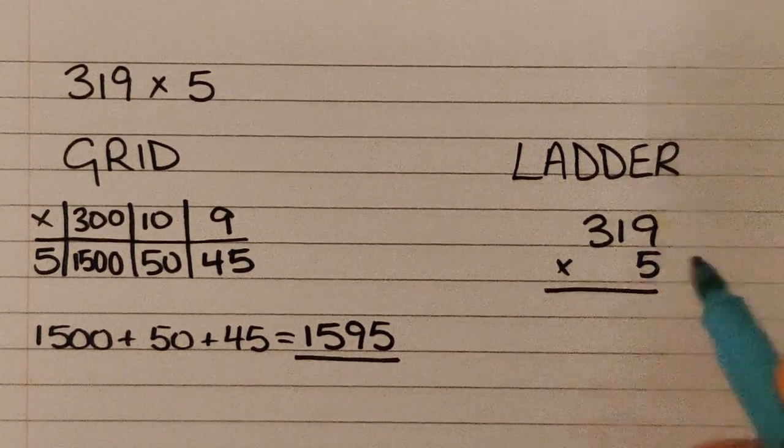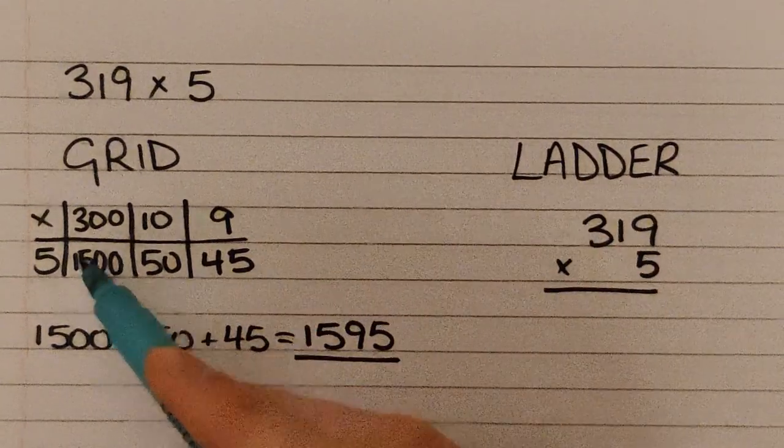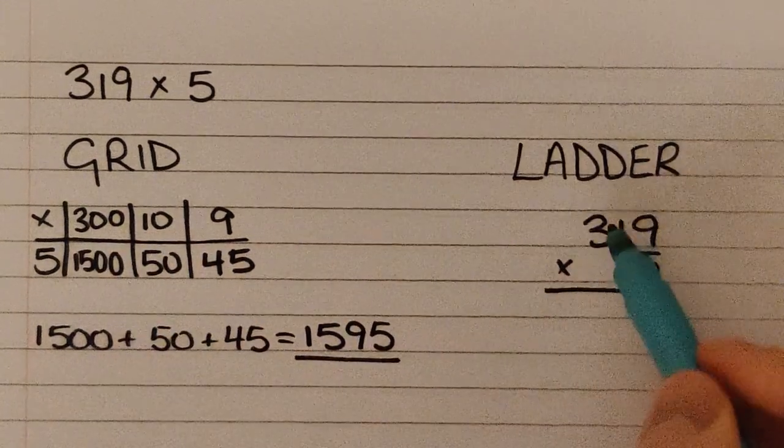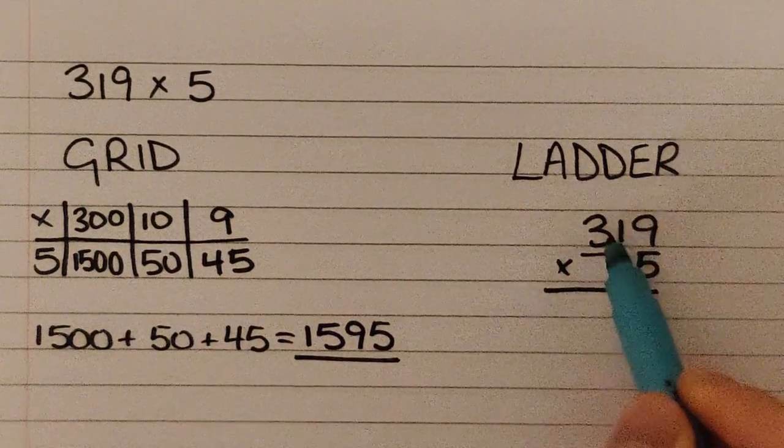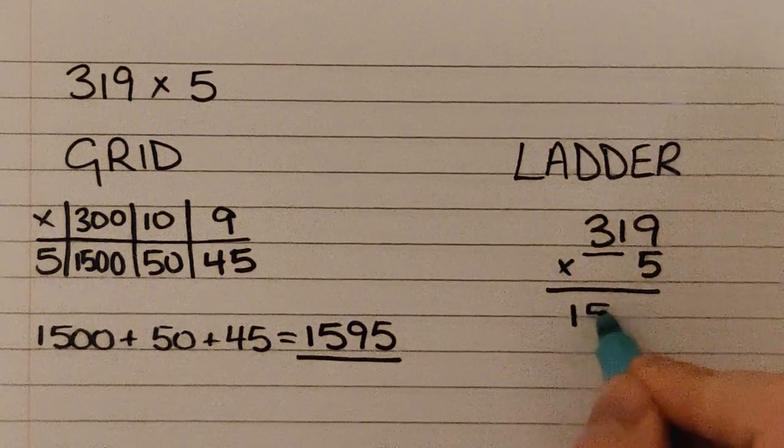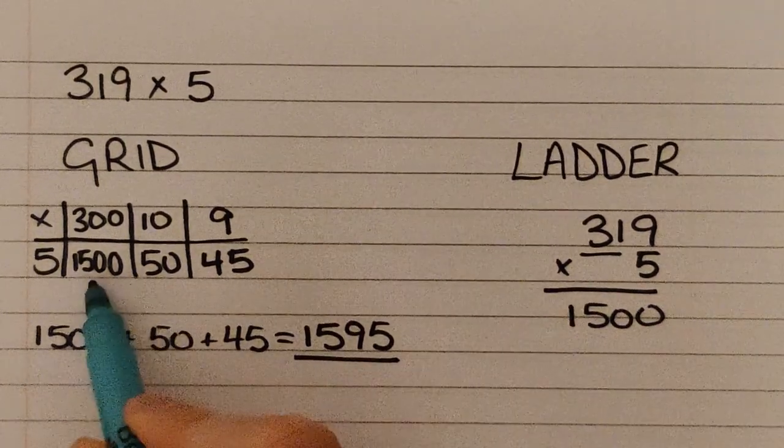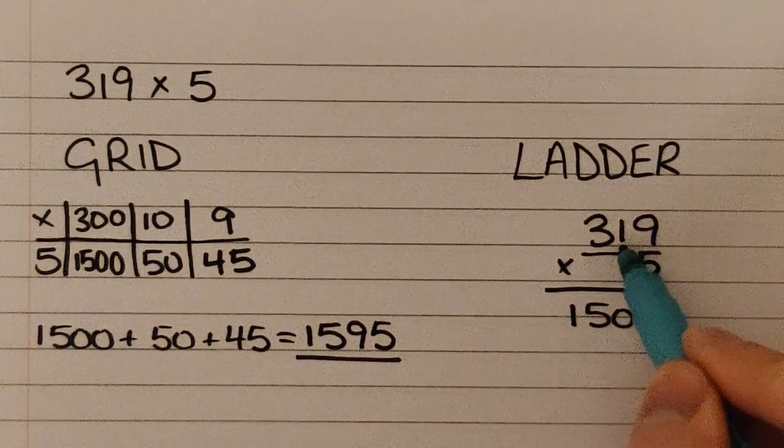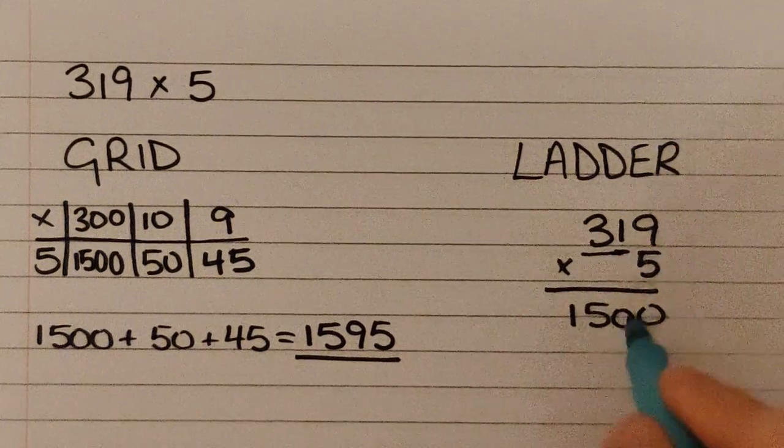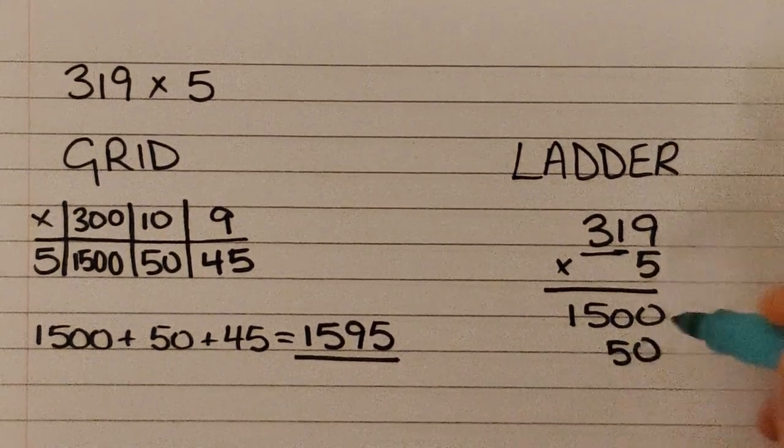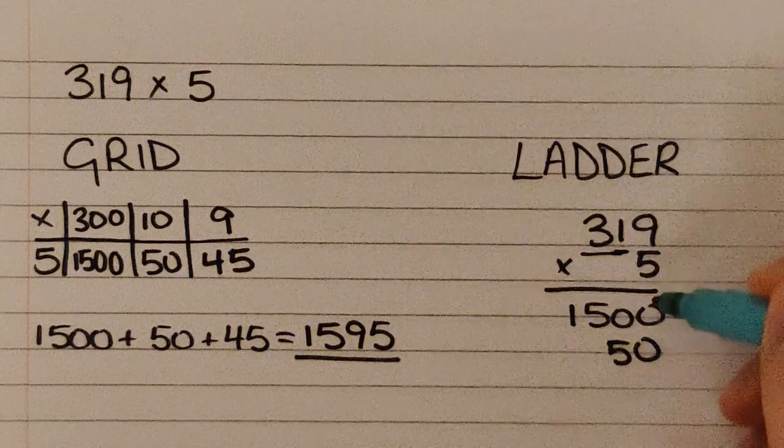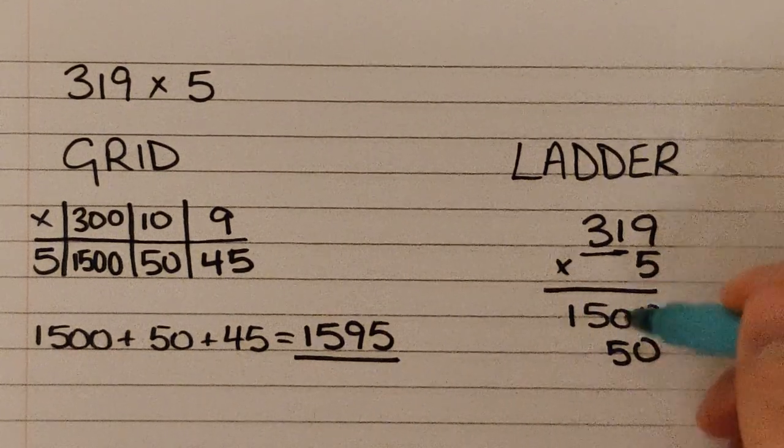The first thing you're going to need to do is, just like the other one, 5 times 300, starting with the hundreds column. 5 times 300 is 1500, just like that other column. Then you'd move on to your tens. 10 times 5 is 50.